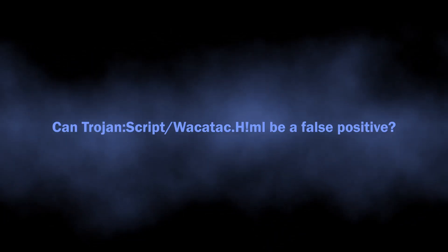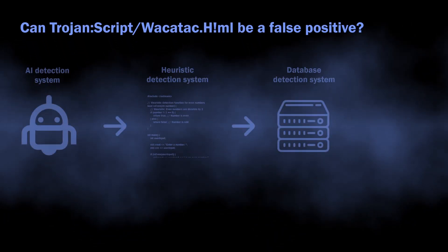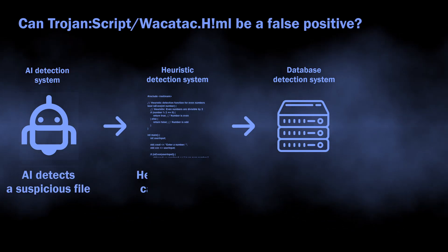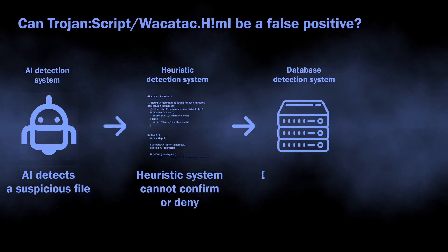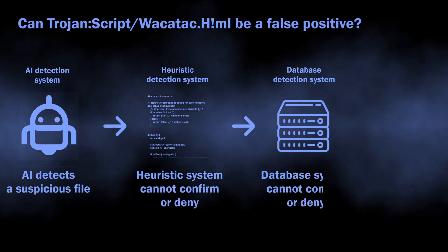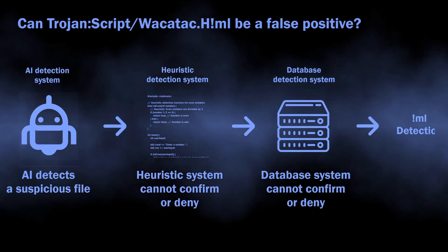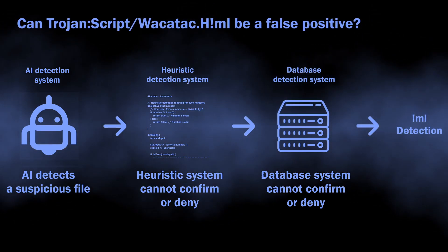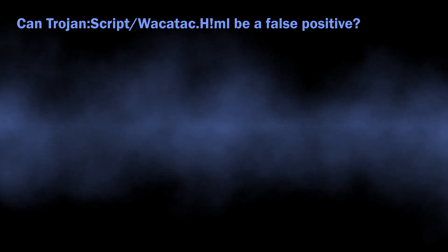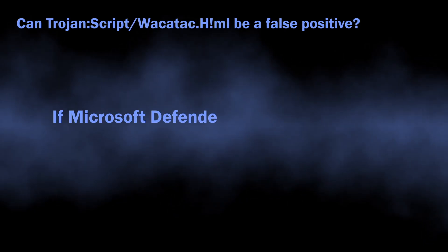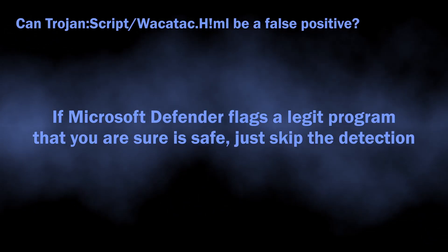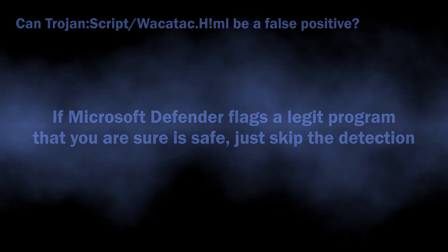There is also a possibility of this detection being a false positive. As I said, it comes from the AI detection system, which requires confirmation from other detection systems for better accuracy. When these other systems cannot confirm or deny that the threat is real, it can end up with a false detection. If you see Microsoft Defender flagging a safe and legitimate application as malicious, you can just dismiss the alarm.